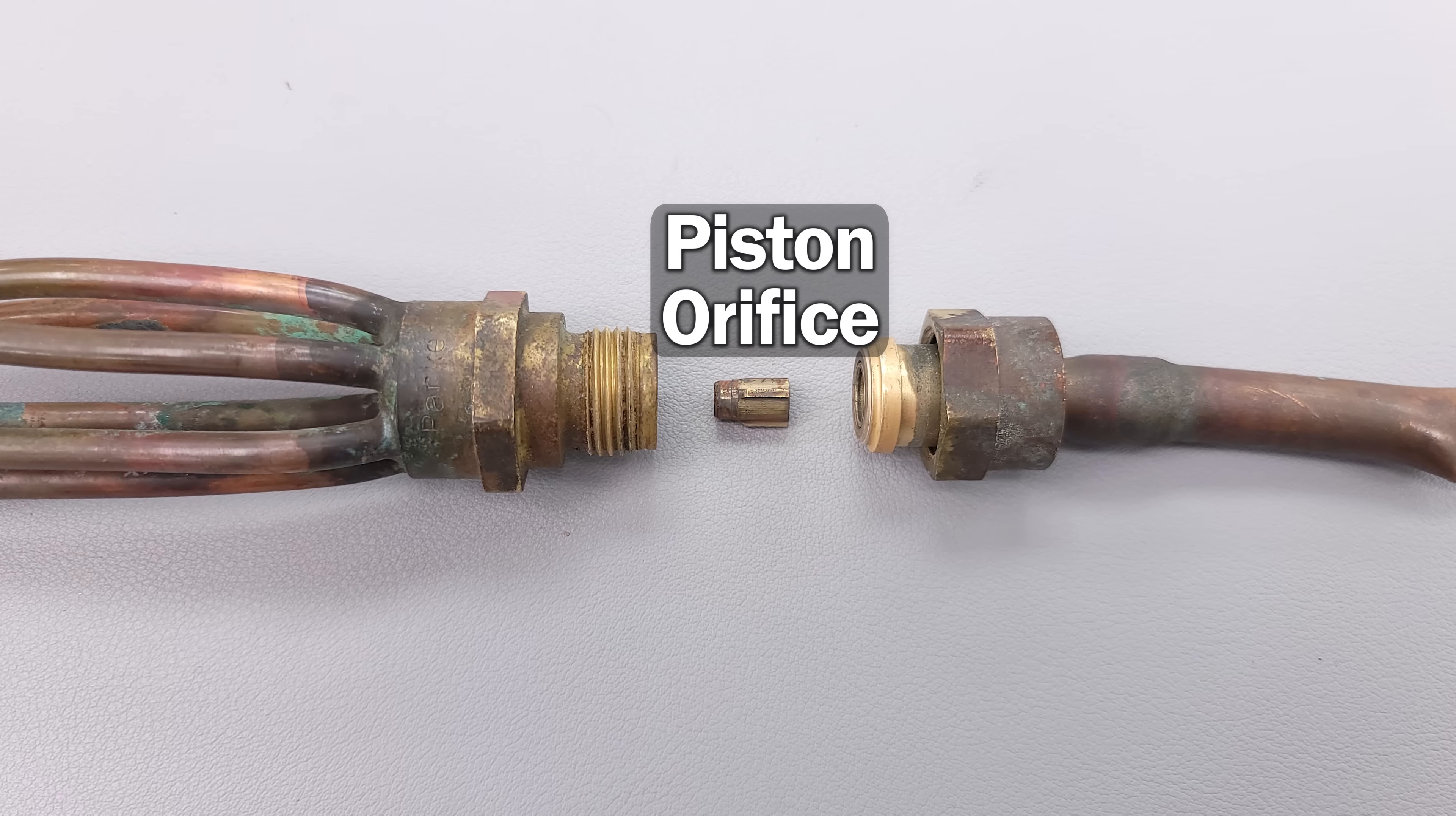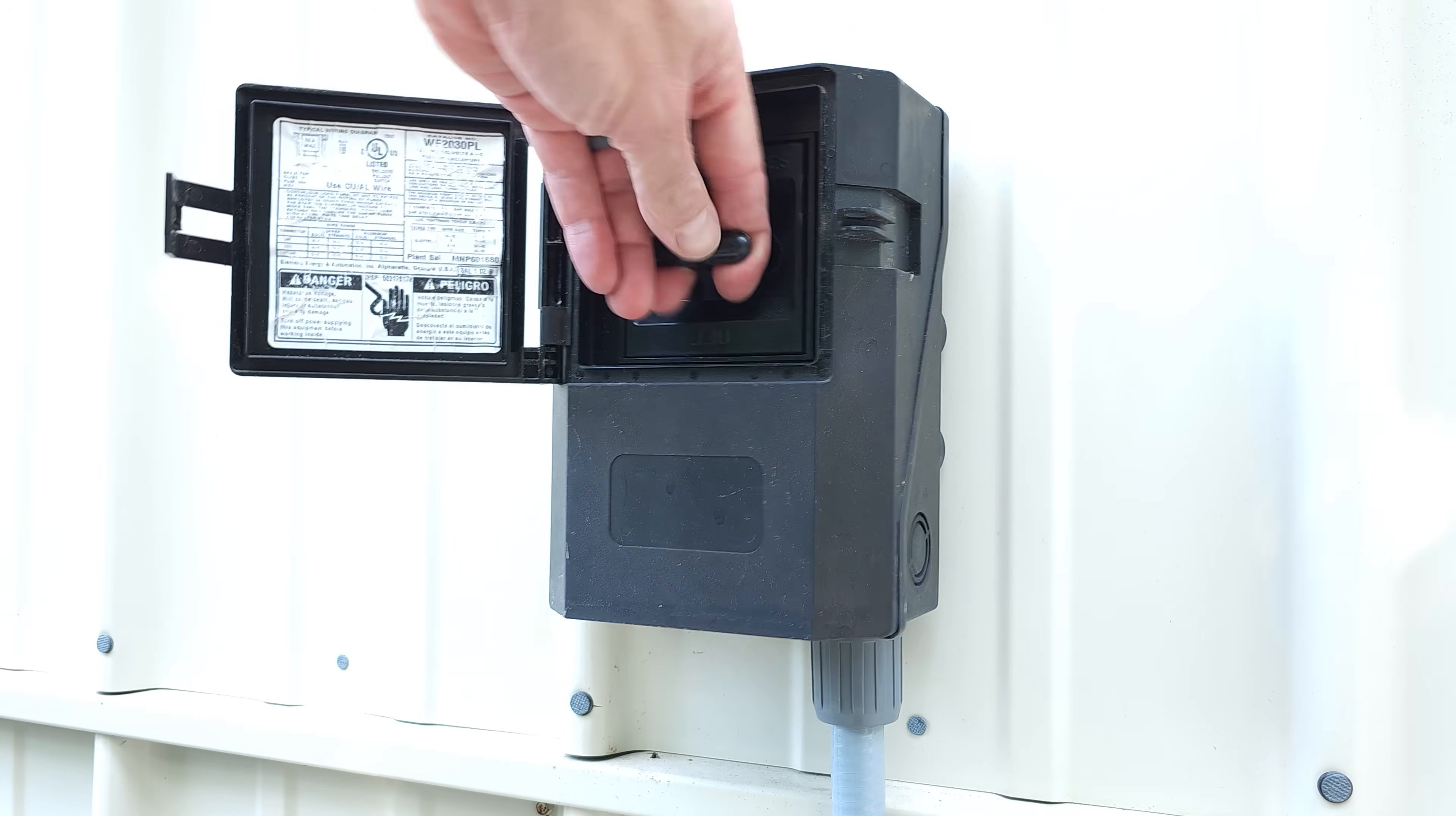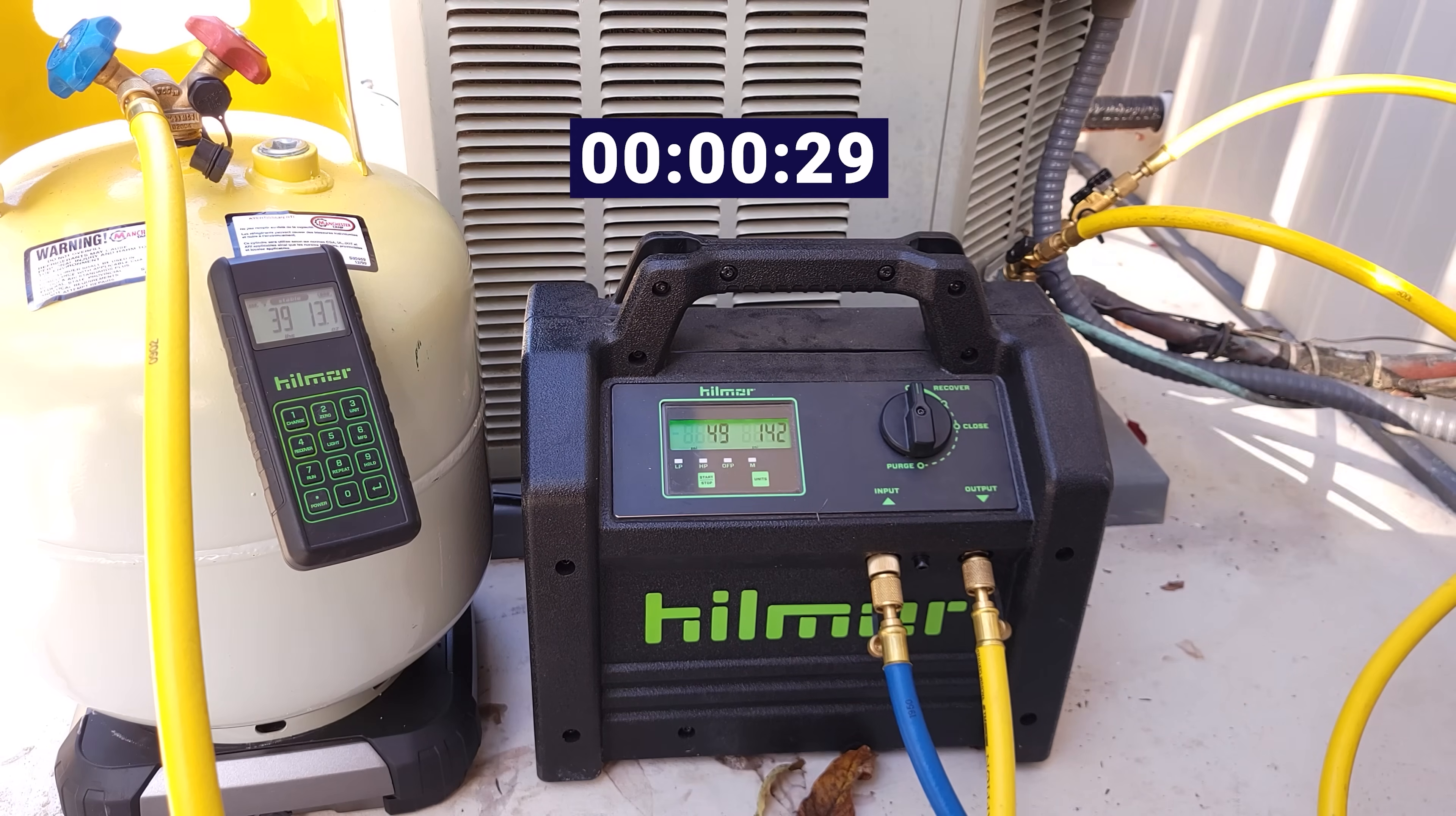In this video, I want to show you how to replace a piston with a TXV metering device. The first thing you'll need to do is turn the power off to the system and recover the refrigerant out of the unit.